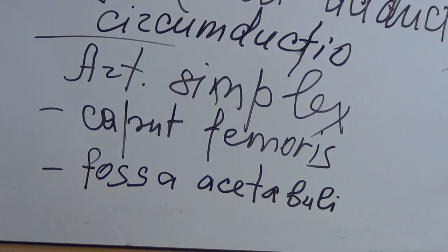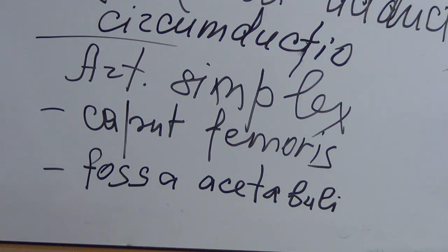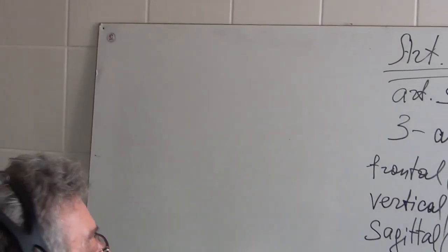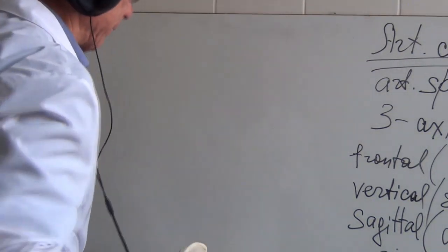Again, only two articulating surfaces means that this joint is simplex, articulatio simplex. And next question we should ask ourselves, what ligaments strengthen, reinforce this joint? So let's write down and find them - ligaments.